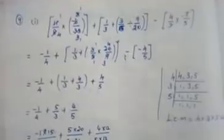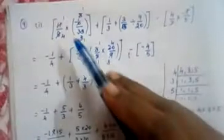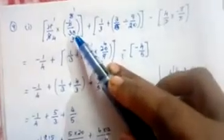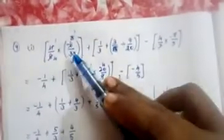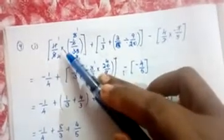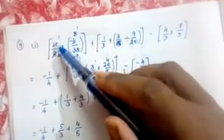9th problem: simplify (11/8 × −6/33) + (1/3 + 3/5 ÷ 9/20) − (4/7 × −7/5). The second question is: 4/3 ÷ 8/−7 − 3/4 × 4/3 + 4/3 × −1/4. We have to simplify both problems. In the first problem there are three bracket terms — a first, second, and third bracket — each to be simplified separately.